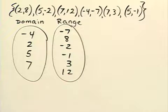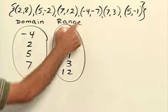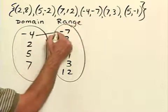Now when we draw our mapping, we need to draw an arrow from the domain to the corresponding y-value in the range. So negative 4 was paired with negative 7, so we'll draw an arrow to that.